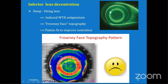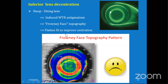In inferior lens decentration, it is a steep fitting characteristic. It will also induce with-the-rule astigmatism due to lid movement. In topography, it will give a frowny face pattern, with a crescent-shaped area of steepening in the pupillary zone and the area of flattening shifted downward (inferiorly). This happens when you have chosen too high a sagittal depth. To correct this, decrease the sagittal depth to flatten the lens. For central island - also a steep fitting characteristic - visual acuity will be poor; it indicates residual refractive power. There is a steep island within the flat central zone, occurring when a larger return zone depth is selected. Decrease the return zone depth to correct this.